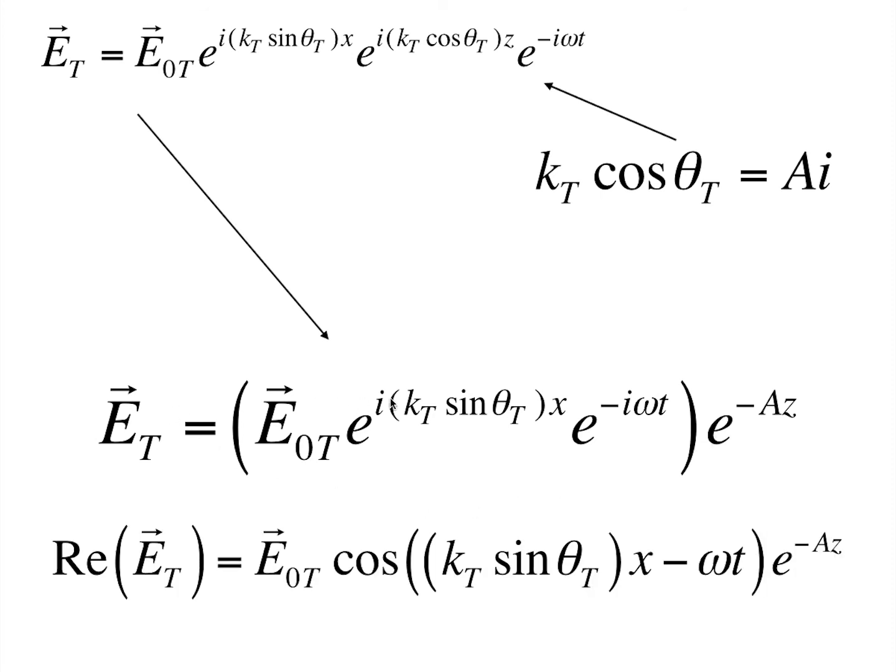And since we are not interested in the imaginary part of the electric field, we take the real part of it. And this real part is equal to e naught t times cos of kt sin theta t x minus omega t, the whole multiplied by e raised to minus az.